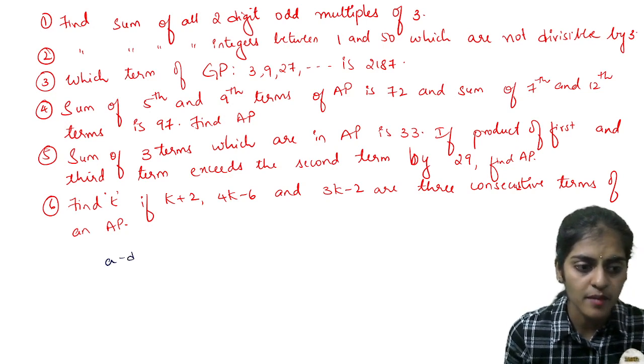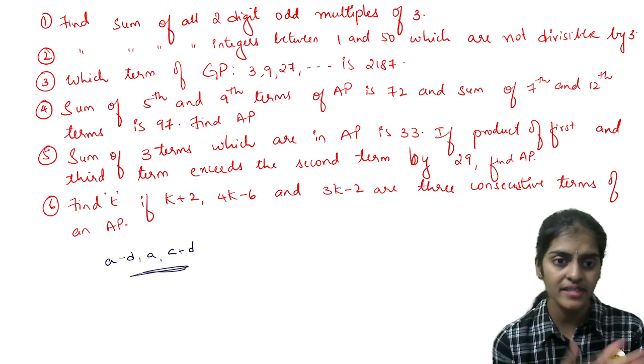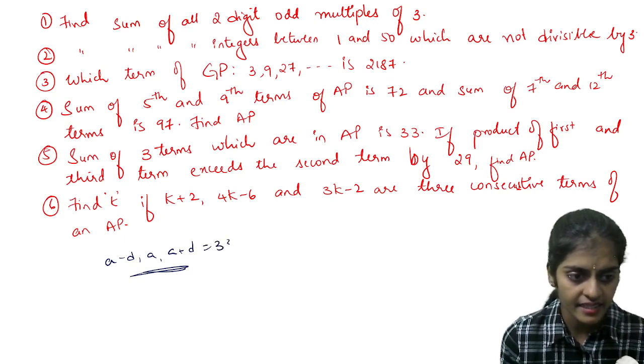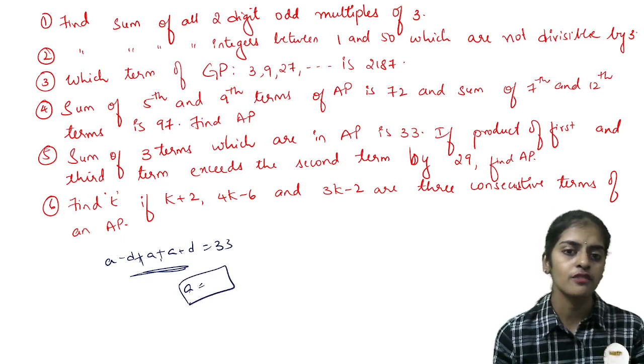I told you why we're taking this and how to solve. Three terms are in AP, sum of the three terms is 33. If I add all these three, from here I will get a value.